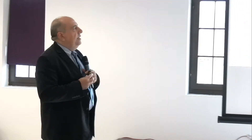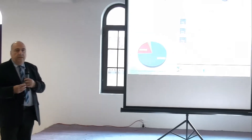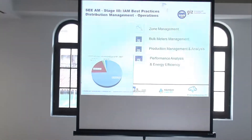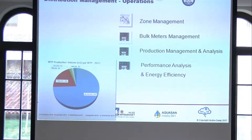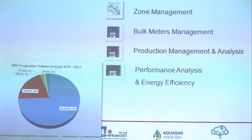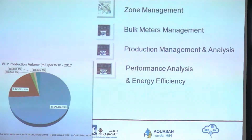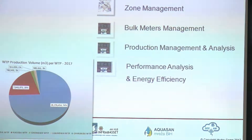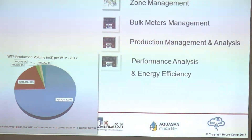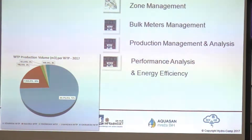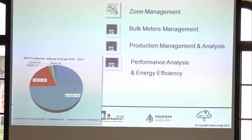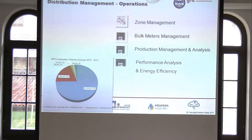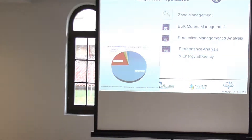Operations is linked to zoning, to zone management, and to bulk meter management — which for a small utility might be one or two bulk meters, but for a bigger utility there could be 30, 40, or 50 bulk meters, making bulk meter management a big operation. Then there's production management, and finally performance analysis, energy efficiency.